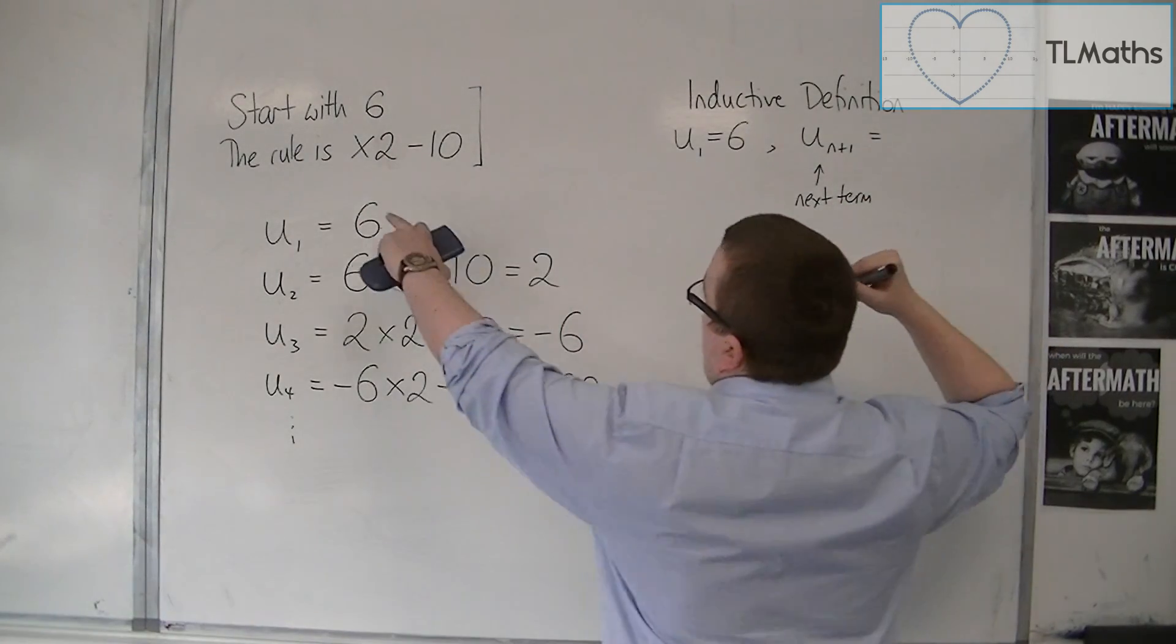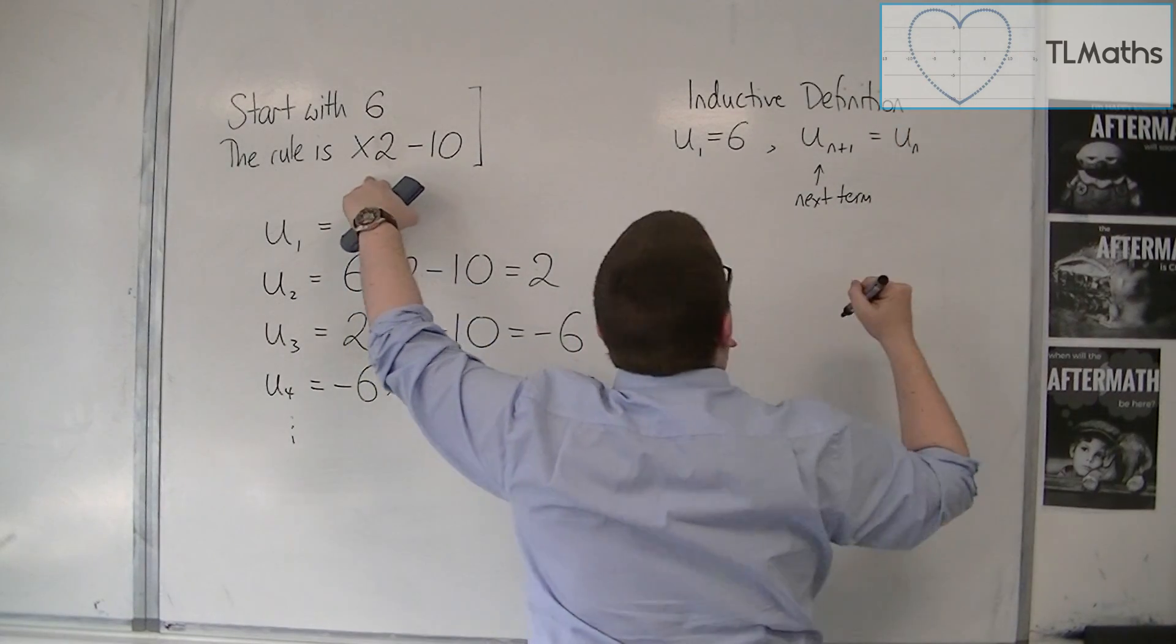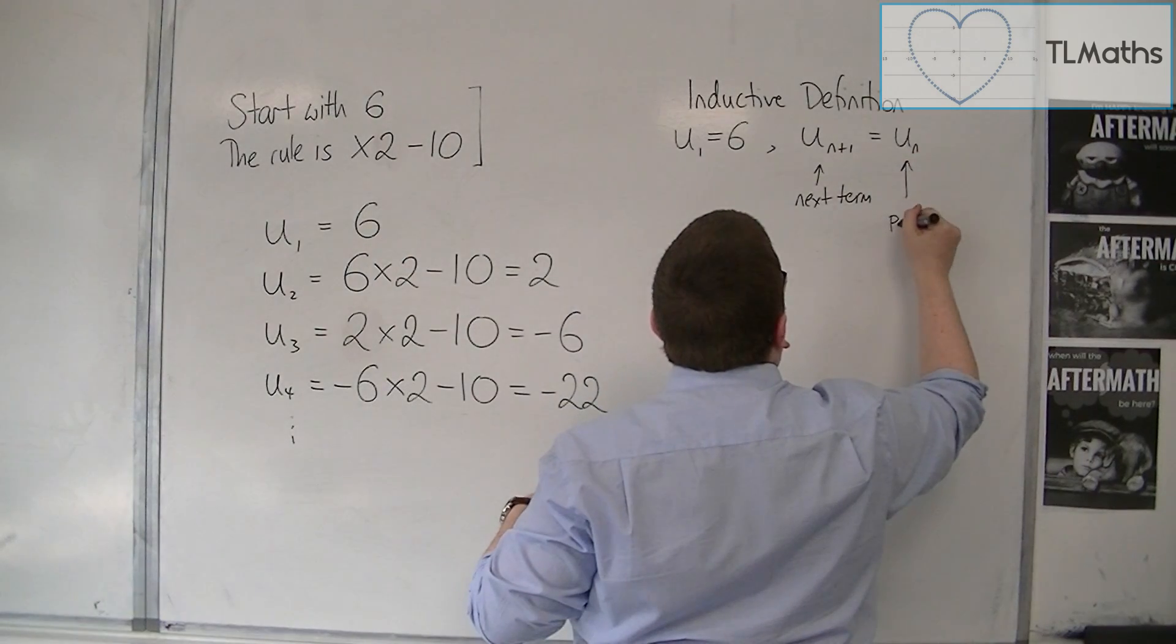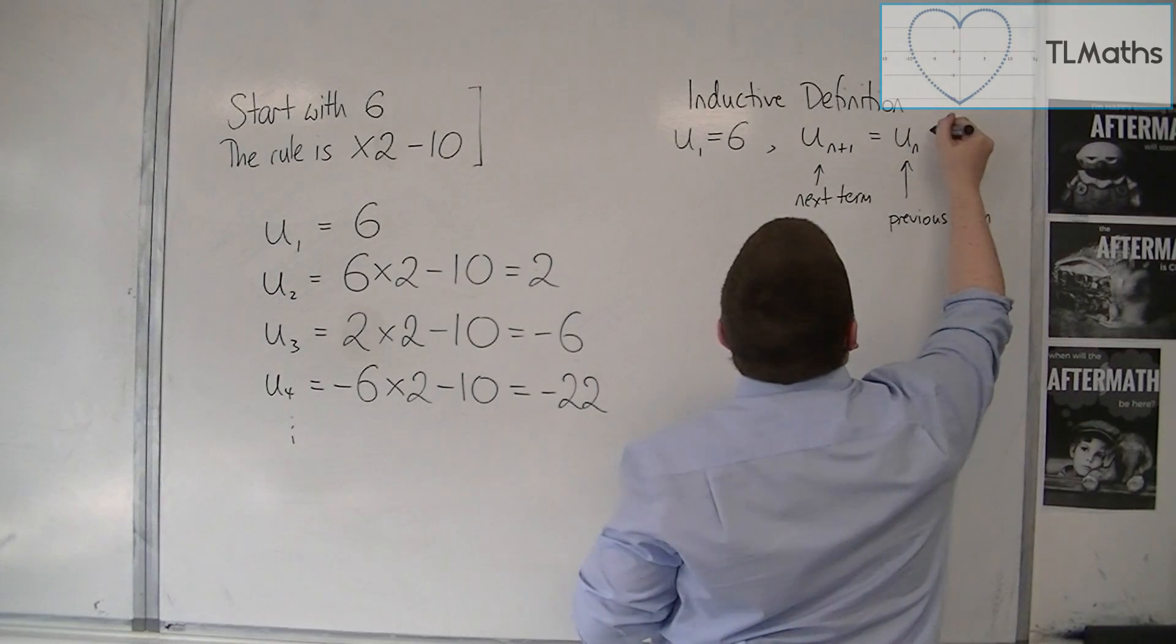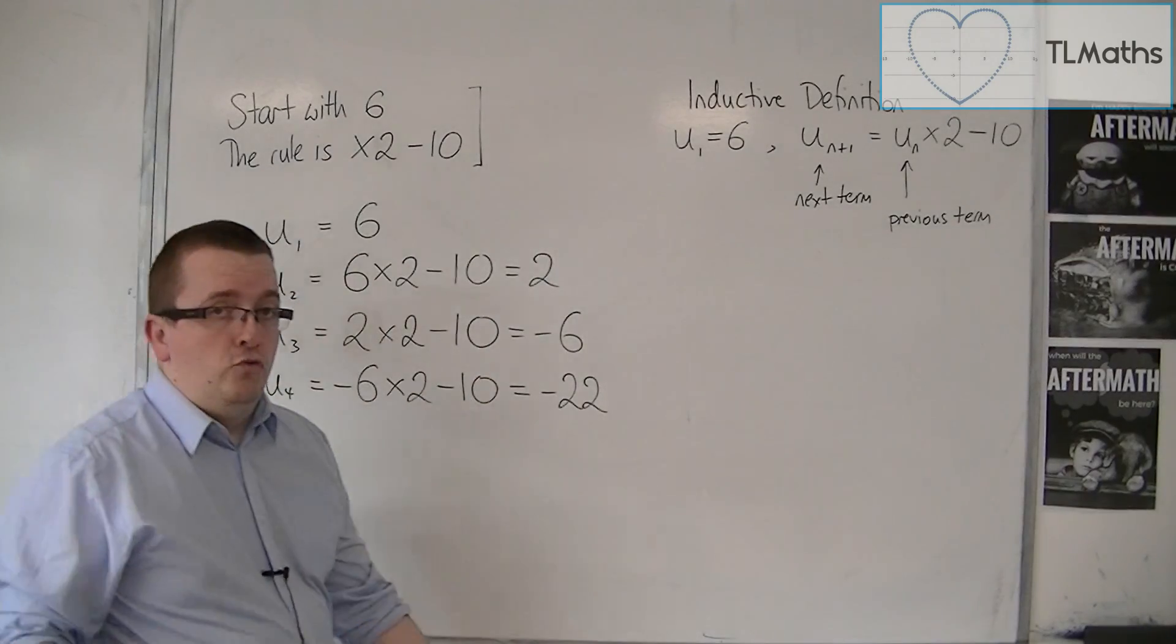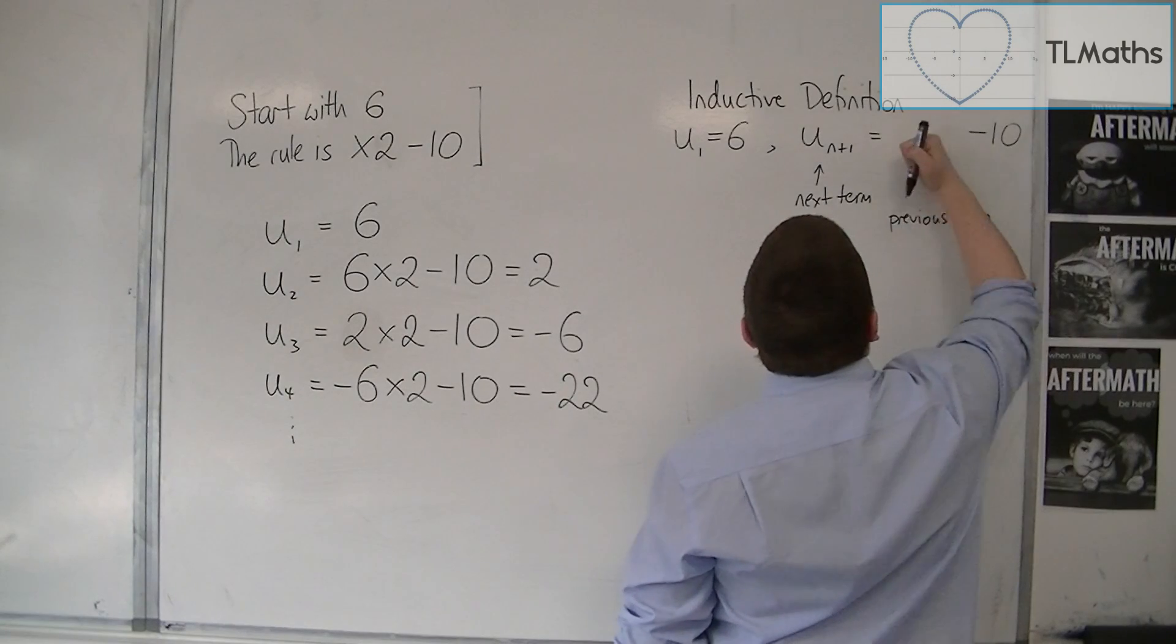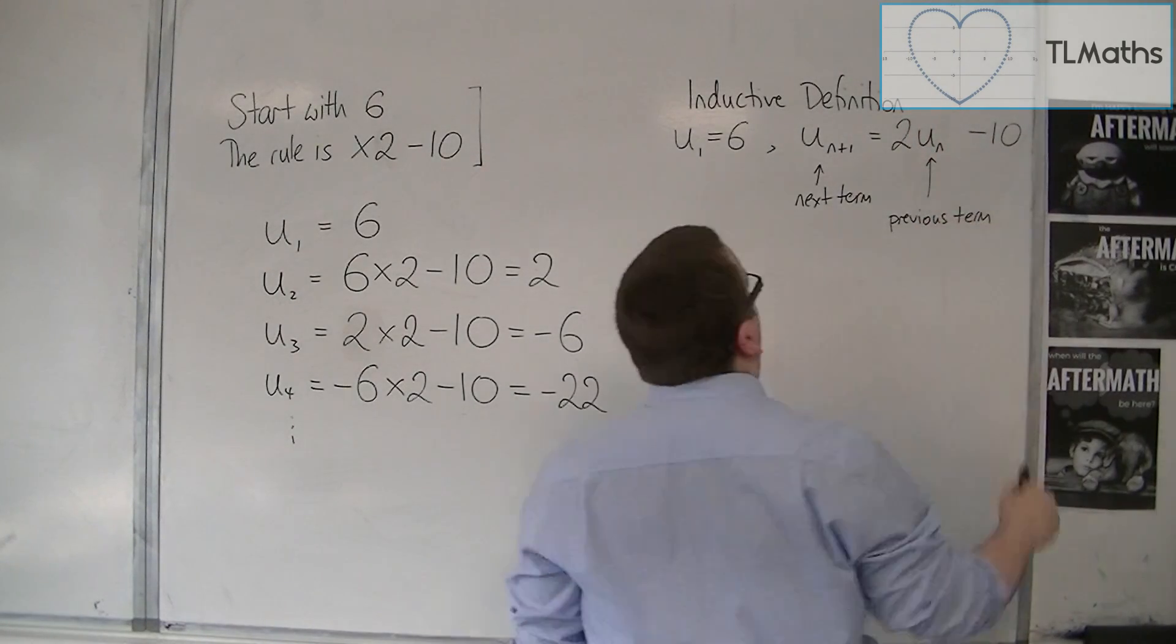Well, I need to times the previous term by 2. So, the previous term would be U_n, times it by 2 and take away 10. So, I could write this as 2U_n minus 10.